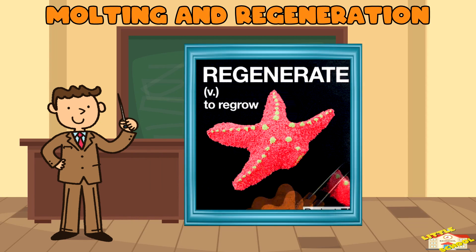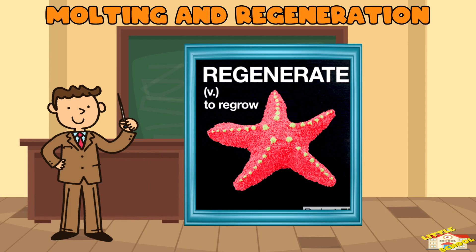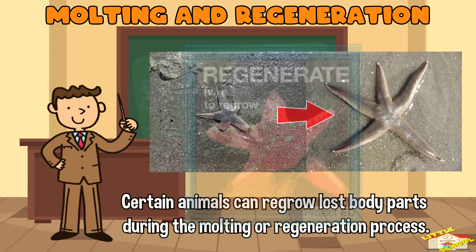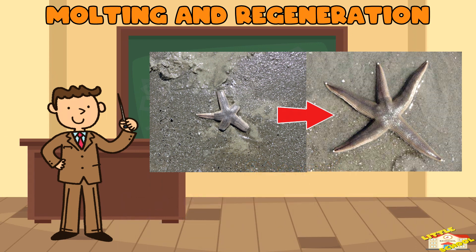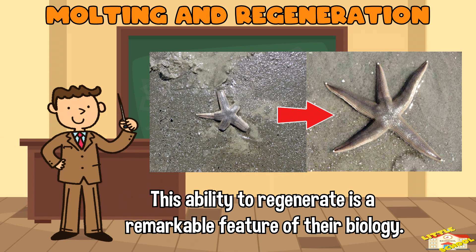Molting and regeneration: certain animals like starfish can regrow lost body parts during the molting or regeneration process. This ability to regenerate is a remarkable feature of their biology.